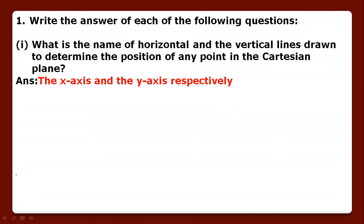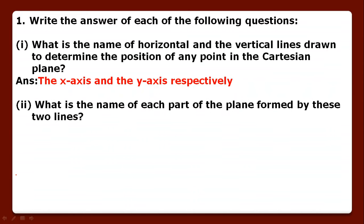Second question: what is the name of each part of the plane formed by these two lines? When these two lines intersect at one point, they divide the Cartesian plane in four parts that are called quadrants.